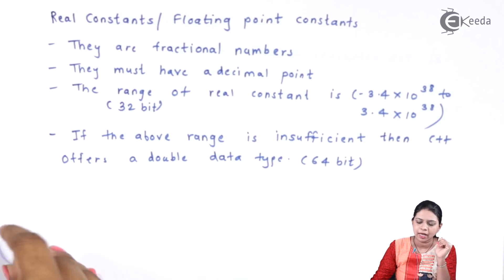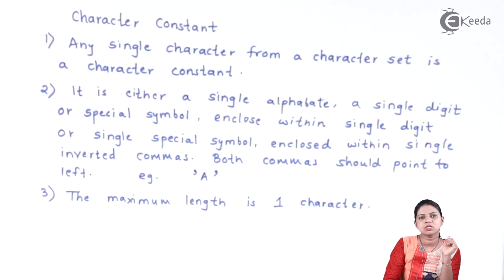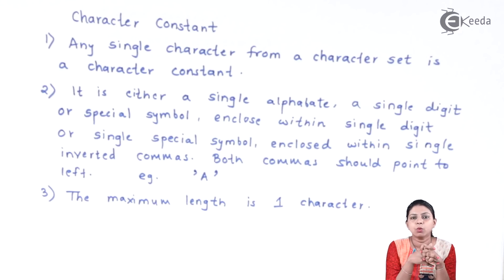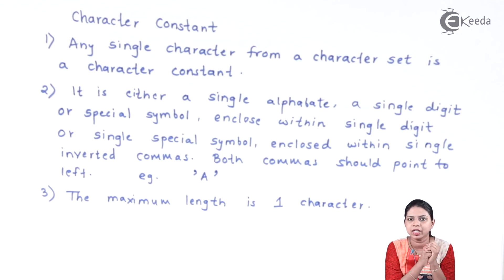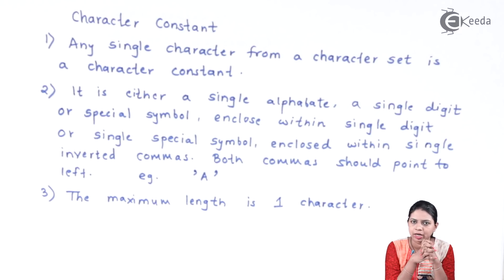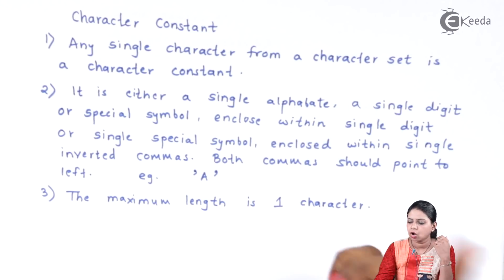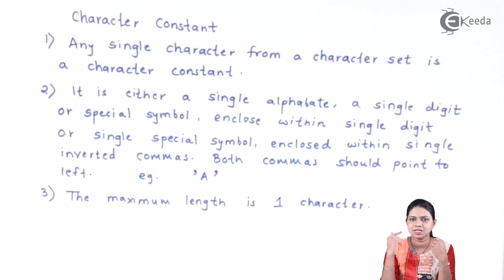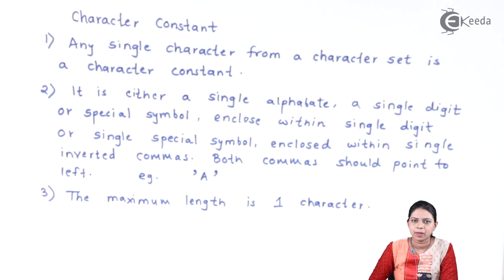The next type is character constant. Character constants are generally a single letter, single digit, or single symbol enclosed in single inverted commas. Any single character from the character set enclosed in single inverted commas can be called a character constant — it is either a single alphabet, single digit, or single symbol, but it must be enclosed inside single inverted commas.